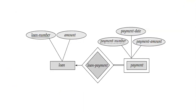Looking at the diagram, you can see that the payment entity set is represented in a double rectangle, indicating it is a weak entity set. We might assume that payment number is going to be the primary key, but it is not, because depending on the type of loan, the payment number is assigned differently.